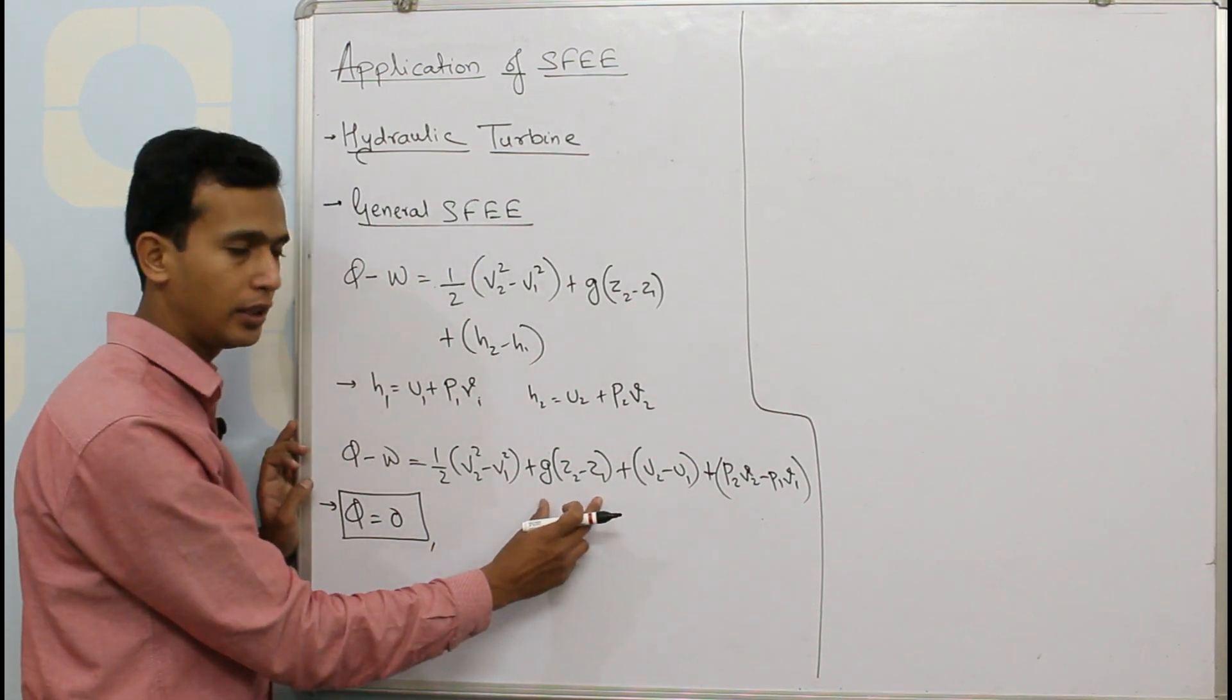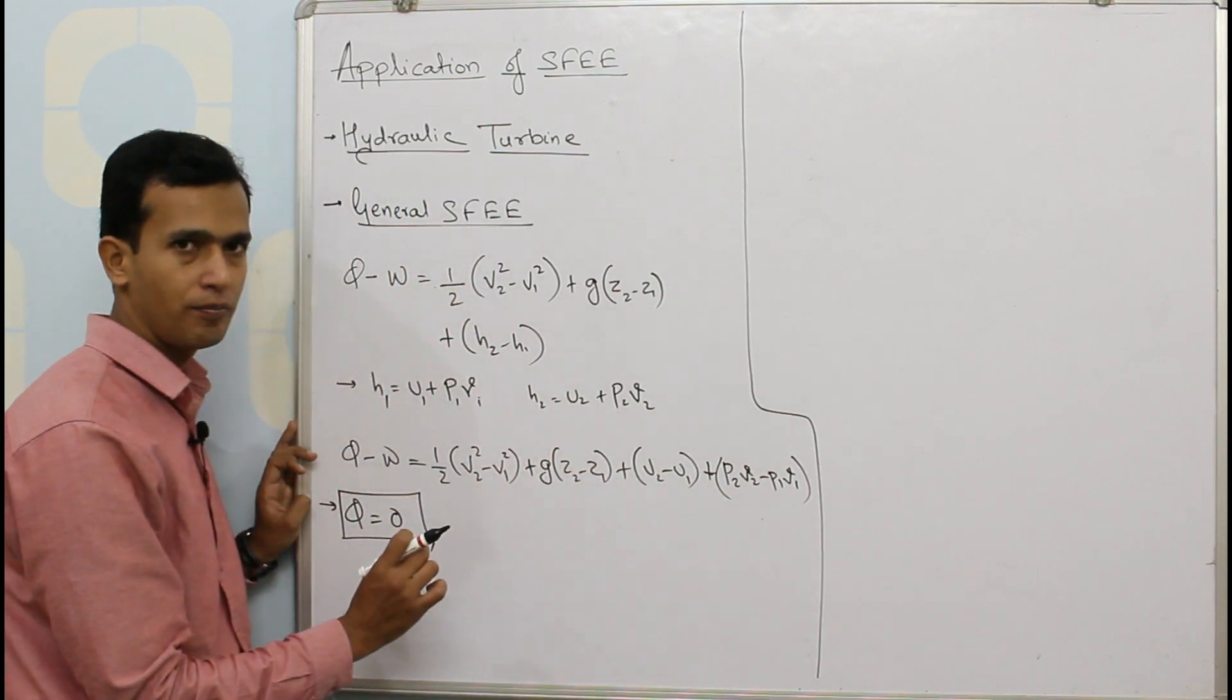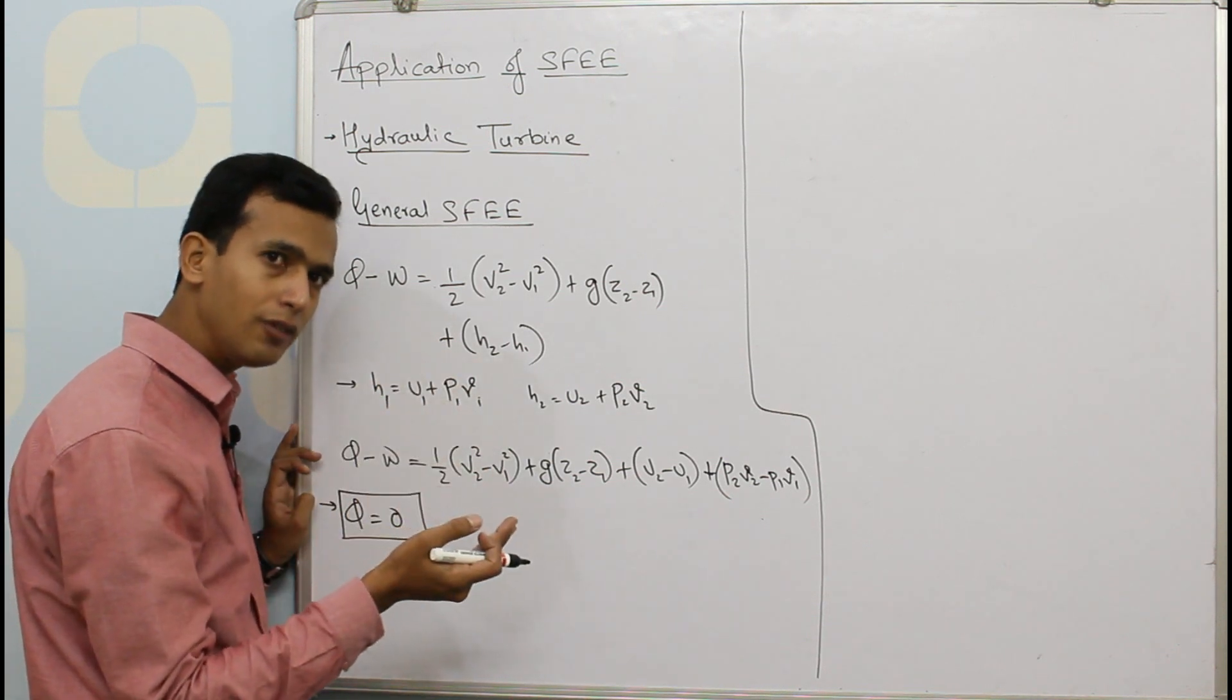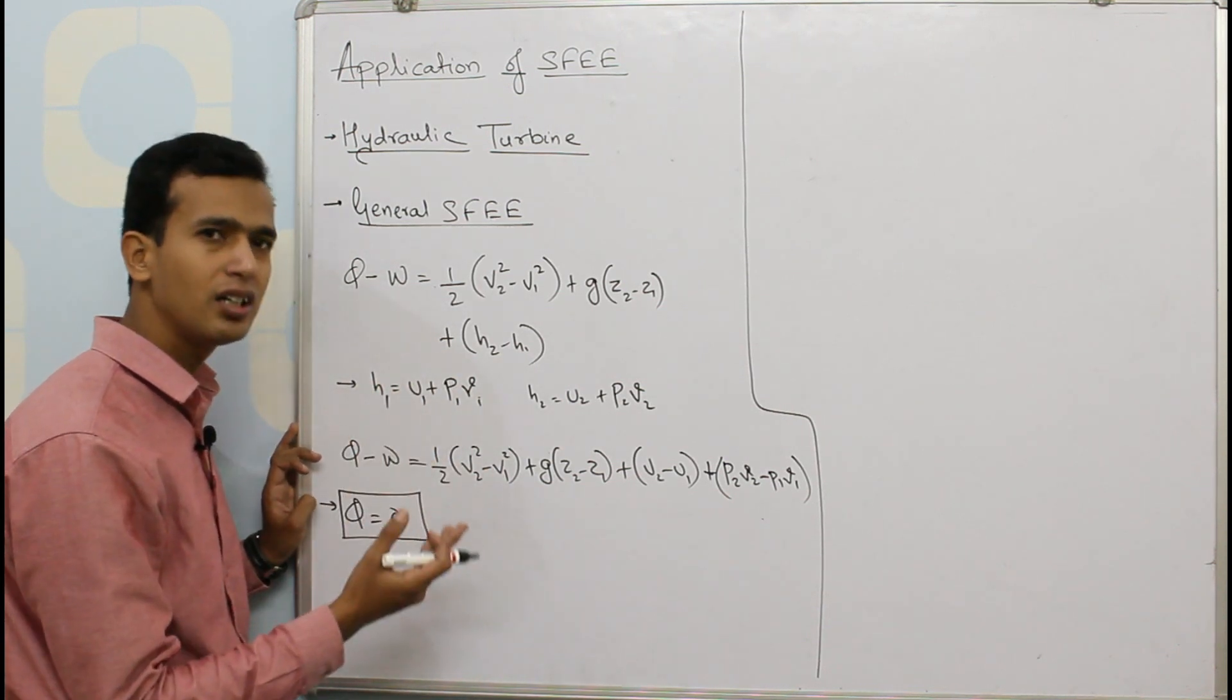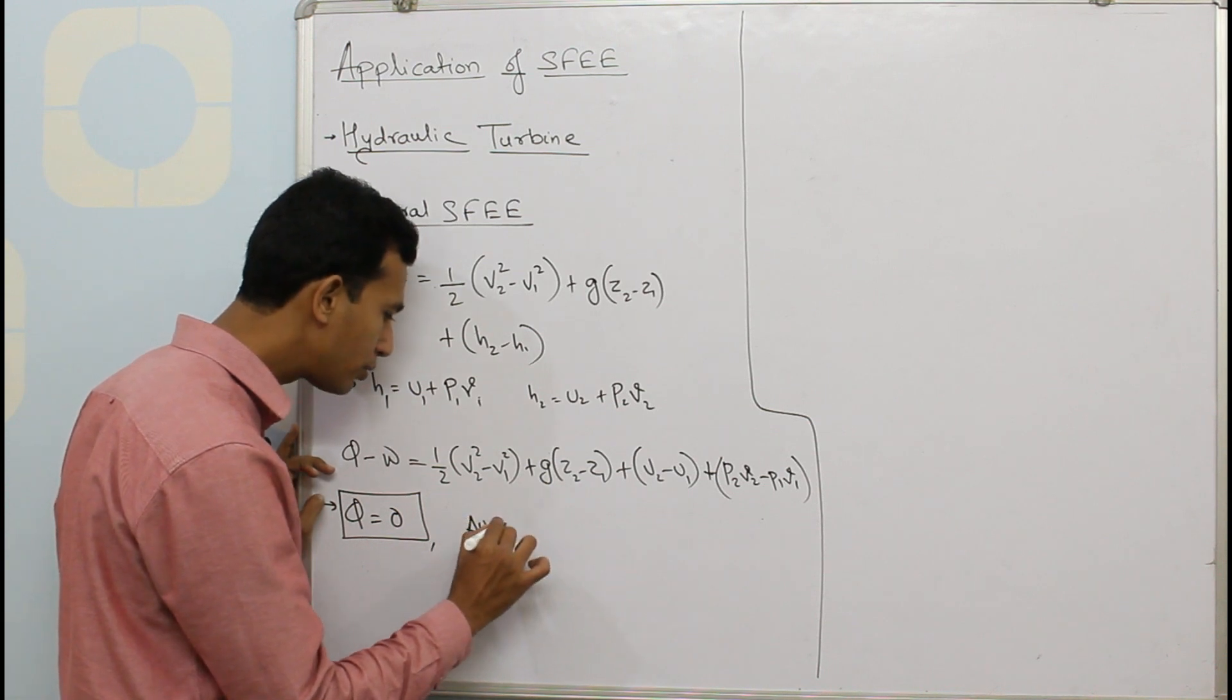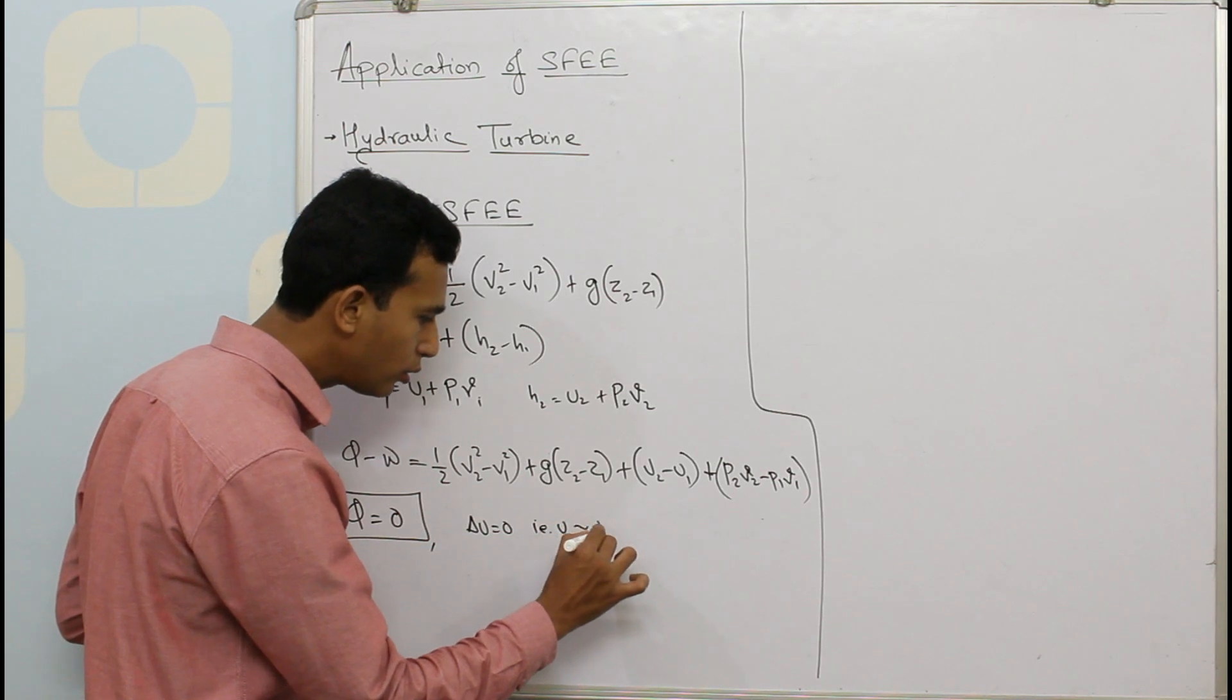There will be changes in velocity and also changes in height so terms kinetic energy and potential energy are going to be there. But internal energy is a function of temperature and before the turbine and after the turbine if we measure there is no considerable change in temperature. That's why delta U equals zero, that is U1 is almost equal to U2.